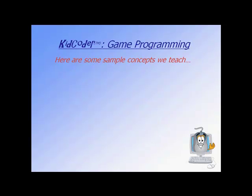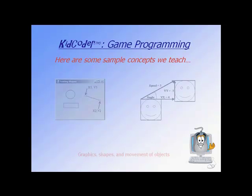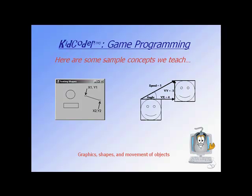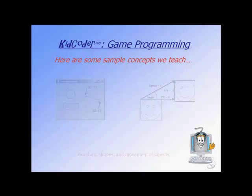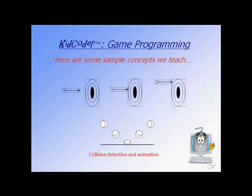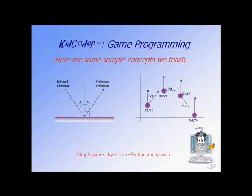The Game Programming course covers important game concepts used in many different types of games. We teach how to draw shapes on the screen and move objects around the screen. Students will learn about collision detection and basic animation techniques. We will also review some simple game physics such as reflection and gravity to make game objects behave in a realistic manner.